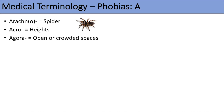Another prefix is agora, which means open or crowded spaces, giving us agoraphobia — a fear of open or crowded spaces. This is typically one of the phobias associated with panic disorders, and we'll talk about it in another lesson. Another prefix is aqua or hydro, so aquaphobia or hydrophobia means a fear of water. You can think of hydrophobia as also associated with rabies disease.